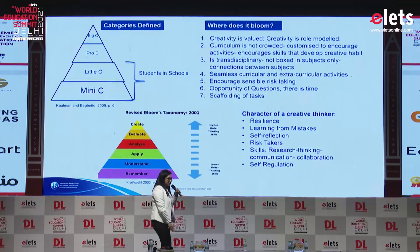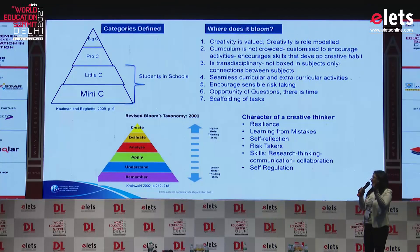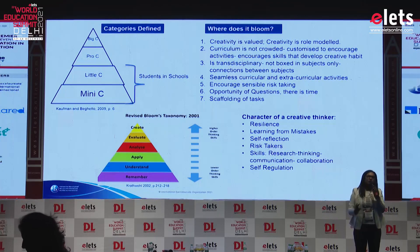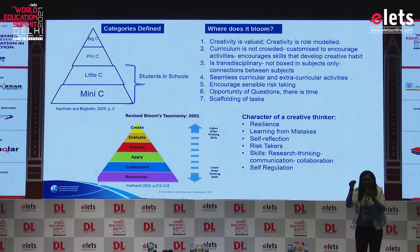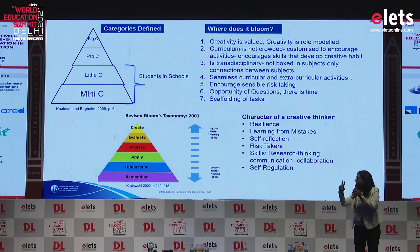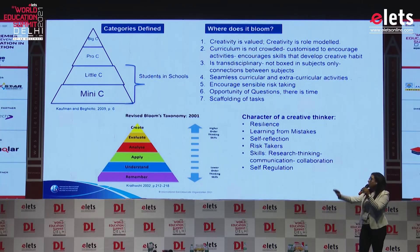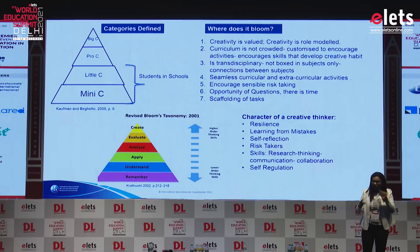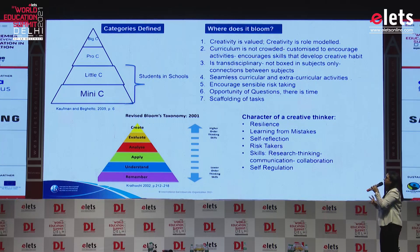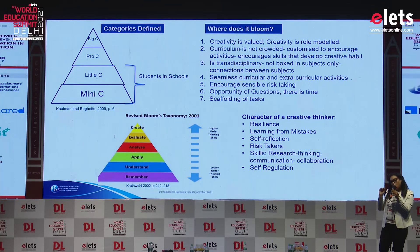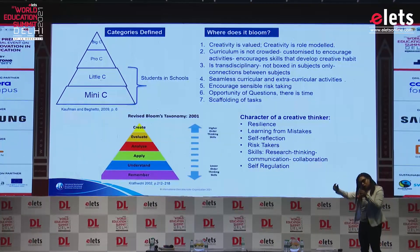There is research that has defined creativity in four levels. Mini-C is the ability to create an understanding — whenever kids learn something new, they create some understanding, and they are being creative. Little-C is when they use this understanding to do new problem solving. Pro-C refers to professional creative people like musicians or artists, and Big-C refers to elite people who invent something drastically new. In school, we generally deal with Mini-C and Little-C.